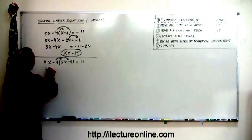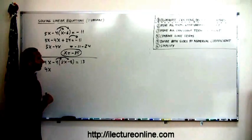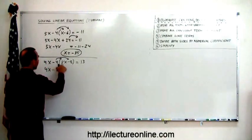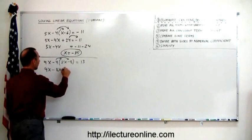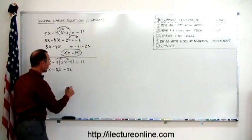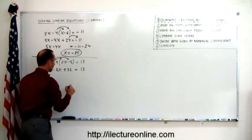So we have a 4x minus 4 times a positive 2x is minus 8x. A minus 4 times a minus 8 is a positive 32. Remember when you multiply negative times a negative, you get a positive. And that equals 13.